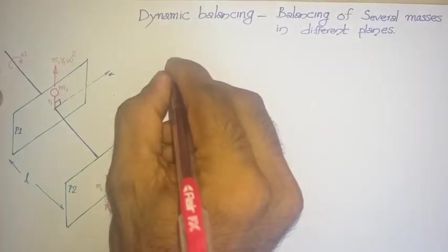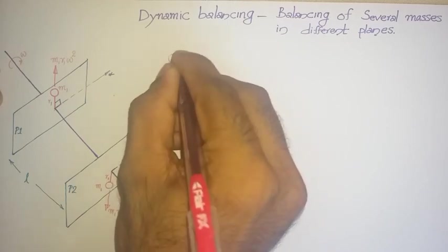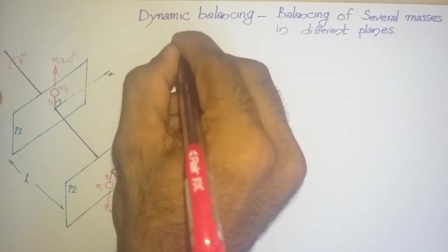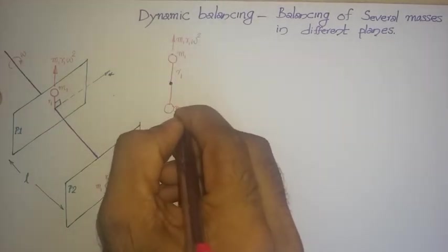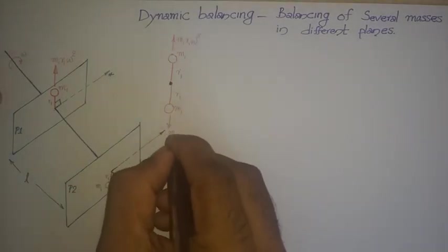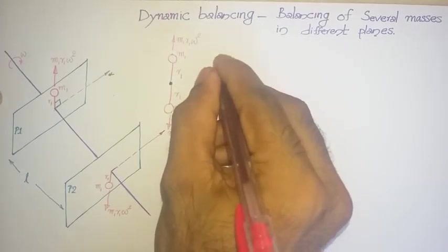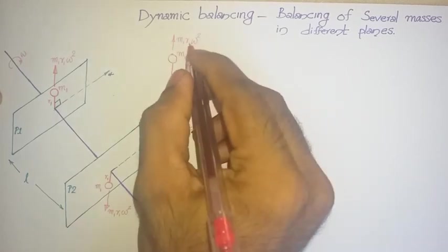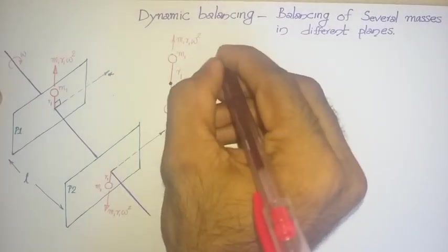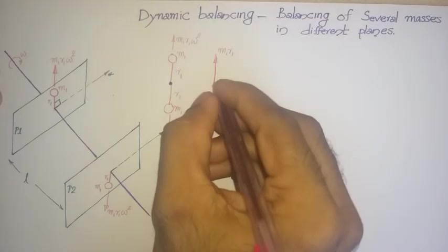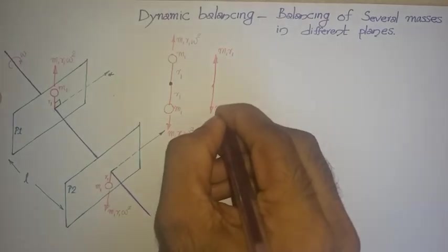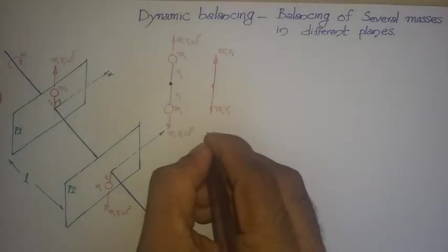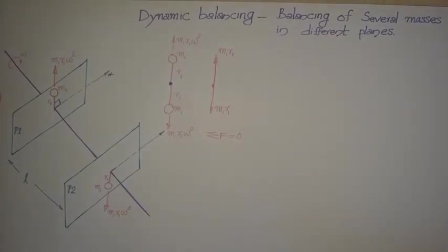At plane 1, the mass m1 at radius r1 is producing a centrifugal force of m1 r1 omega squared, and at plane 2 the same mass m1 r1 is producing the same centrifugal force. When drawing the vector polygon, since omega squared is common for both planes, we draw only m1 r1 instead of m1 r1 omega squared. In plane 1, m1 r1 acts upward, and in plane 2 the same force m1 r1 acts, so sigma F equals zero — the static balancing condition is satisfied.